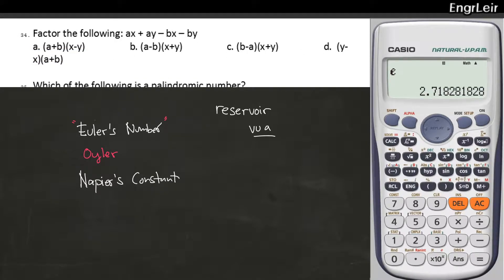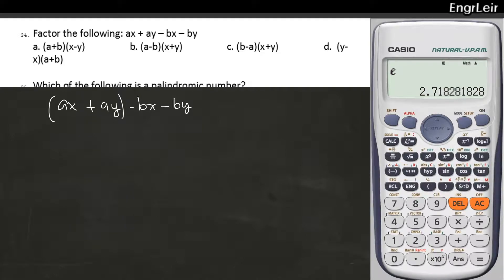Number 34. Factor the following. Papactor tayo. So ang gagawin ko, i-gugroup ko ito. Tapos ito rin, i-gugroup ko ito. Pero dapat may plus dito. So anyway, ilabas natin yung negative sign nun. So magiging Ax plus Ay minus Bx plus By. Okay. I did some grouping.